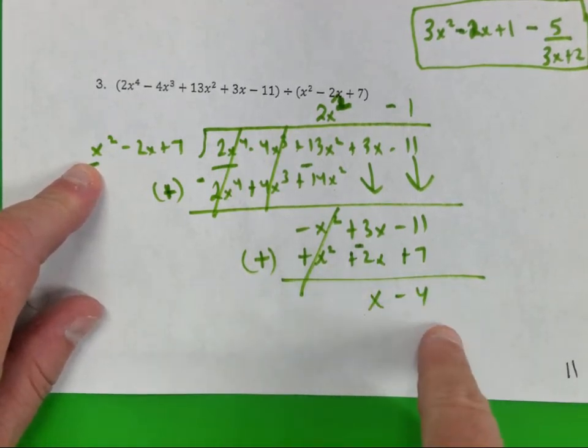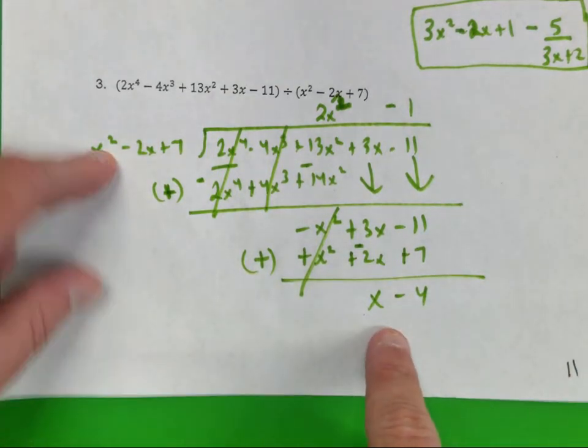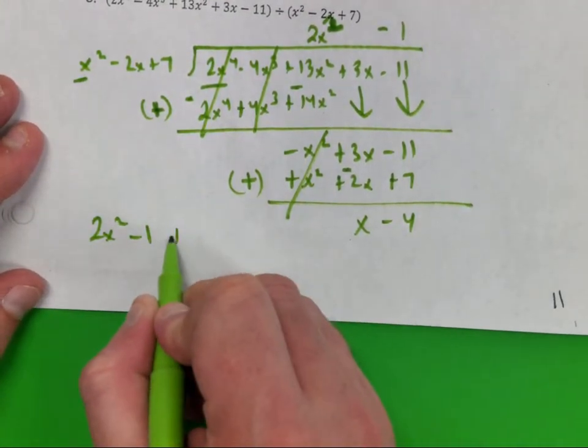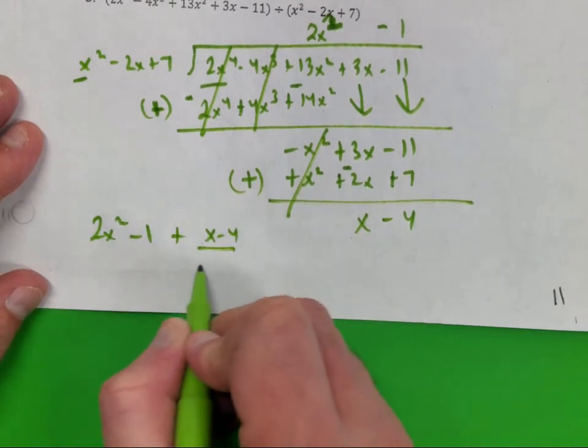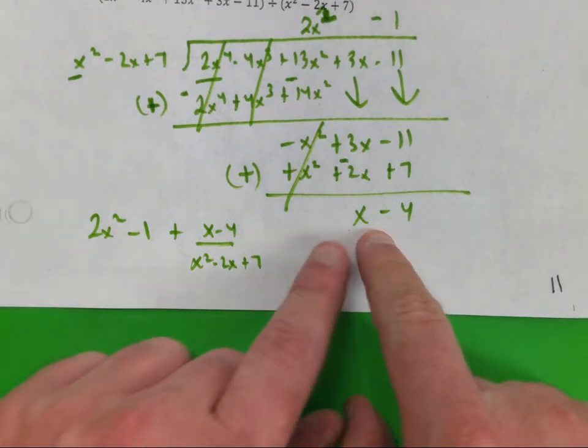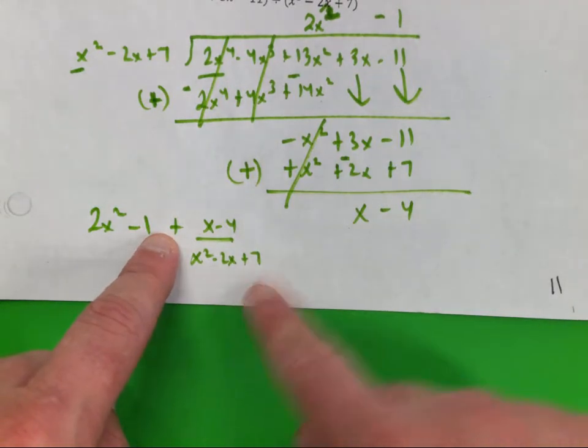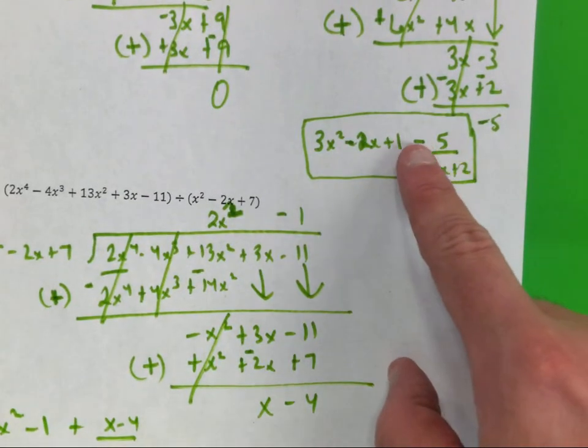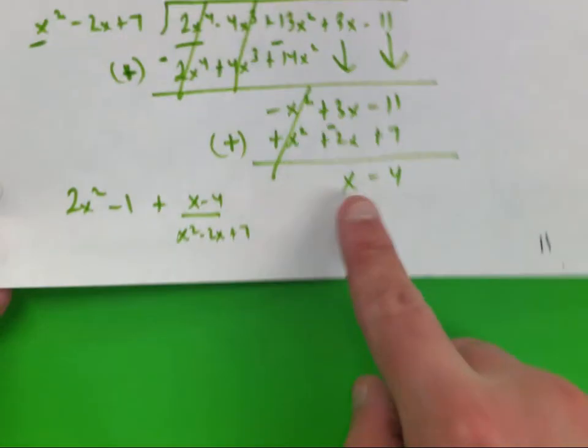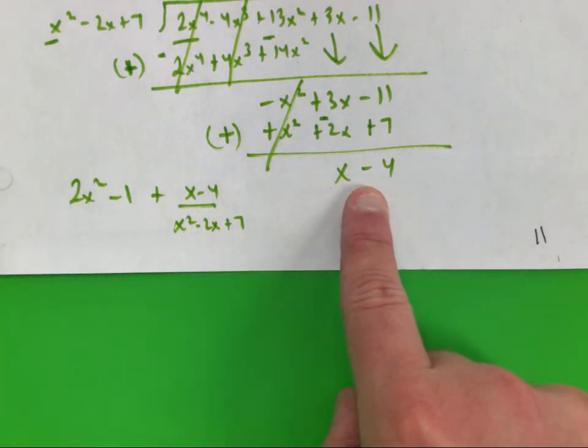I have one term here. How many terms do I have over here? So how many do I have to bring down? Bring both of them down. I want x squared to look like negative x squared, so I'm going to multiply by what? Where would I put negative 1, above the 3x or above the minus 11? So that's going to give me negative x squared plus 2x minus 7. This is why I know I'm at my stopping point. I have two terms here, how many terms do I want? Three. Do I have anything to bring down? That's your remainder. So your answer would be 2x squared minus 1 plus x minus 4 over x squared minus 2x plus 7.